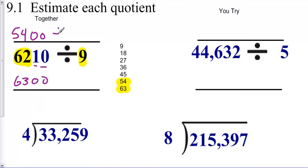So when I look at my estimate, I see that 5400, 6210, 6300. So my two estimates are in between the actual dividend. So I divide. 5400 divided by 9 is 600. Add my two zeros. 6300 divided by 9 is 700. Add my two zeros.